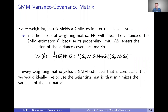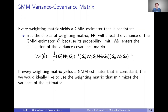If we think back to those properties, remember every weighting matrix yields a GMM estimator that's consistent. When we talked about consistency, we didn't say it depended on the weighting matrix — any choice of weighting matrix will achieve a consistent estimate. But the choice of weighting matrix does factor importantly into the asymptotic variance of our estimator.